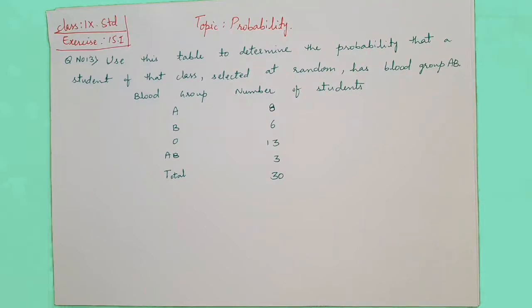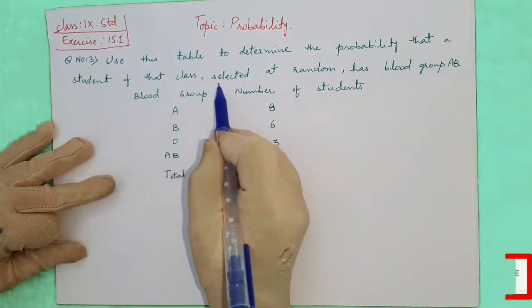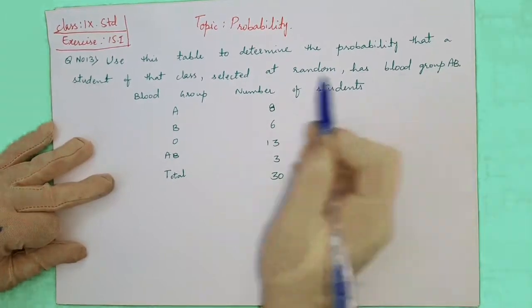Hello everyone, now the probability exercise 15.1 question number 13. Use this table to determine the probability that a student of the class selected at random has the blood group AB.